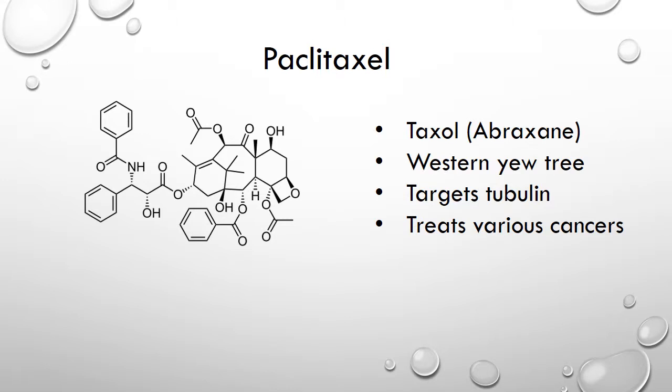Paclitaxel, also called Taxol, brand name Abraxane, was the first anti-mitotic drug. Isolated from the bark of the Pacific yew tree, the process only yields a small amount of the medicine and is expensive. It is used to treat ovarian cancer, breast cancer, lung cancer, bladder cancer, prostate cancer, melanoma, and esophageal cancers. The side effects include bone marrow loss, hypersensitivity, muscle aches, hair brittleness and loss, and peripheral neuropathy, among others.